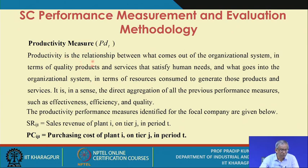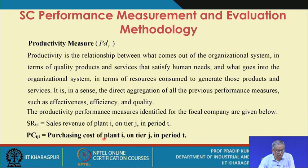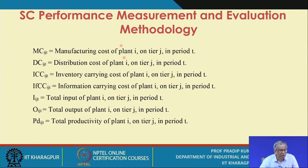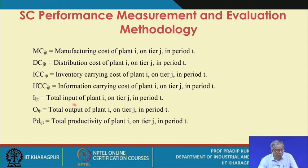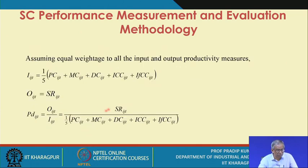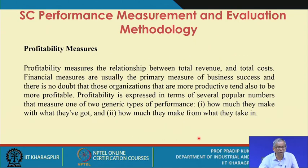For productivity measurement, it is essentially the relationship between output and input. You need to consider sales revenue as the output and purchasing cost, manufacturing cost, distribution cost, inventory carrying cost, and information storing cost as inputs. When you consider total output versus total input, you get the total productivity — it is the ratio of output divided by inputs.